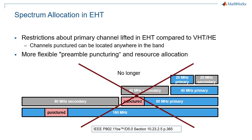In our previous episode about 802.11ax, we discussed how transmission requires the full primary channel to be available. For example, if the secondary 20 MHz channel is not available, no transmission larger than 20 MHz can take place. These restrictions are lifted in 802.11be with extended concepts for puncturing. In particular, EHT multi-user PPDUs can be sent as soon as all non-punctured 20 MHz channels are idle, whatever their location. There are still a few restrictions on puncturing, which will be discussed in a dedicated episode, but the scheme is much more flexible.